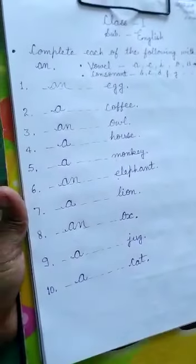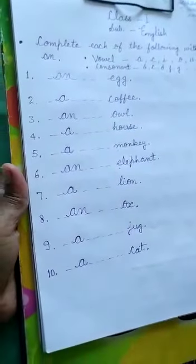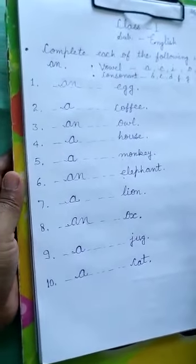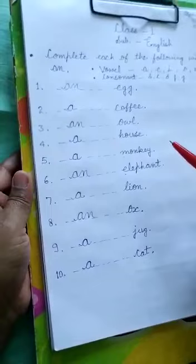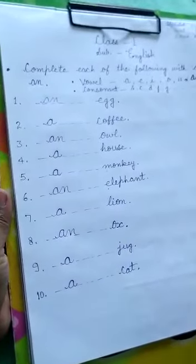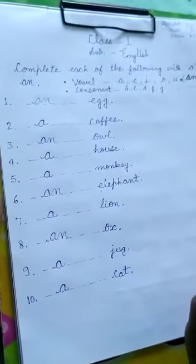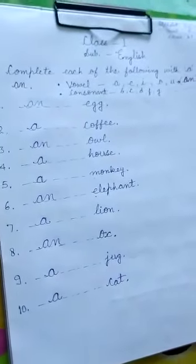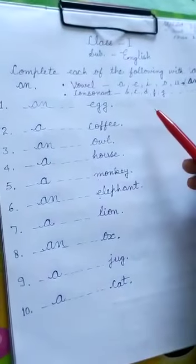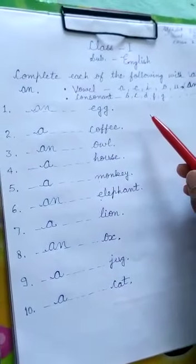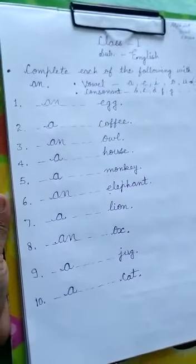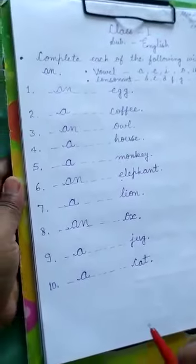So today you learned A and AN. We have to use AN with a vowel and A with a consonant. Thank you.